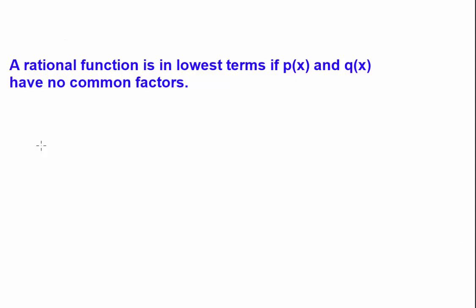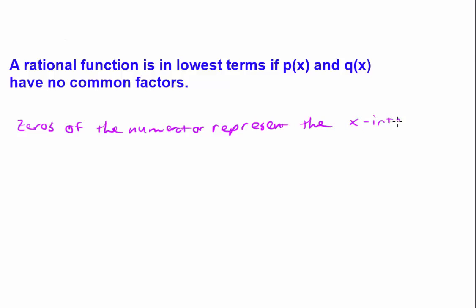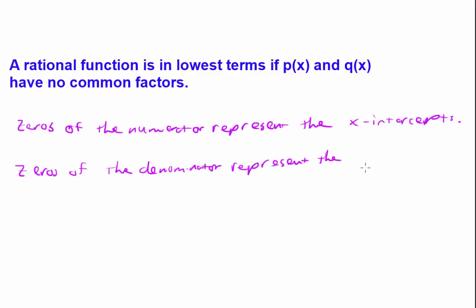A rational function is in lowest terms if p of x and q of x have no common factors. There's another property to discuss: the zeros of the numerator and the zeros of the denominator. Zeros of the numerator represent the x-intercepts. To find the x-intercepts, we set the numerator equal to 0 and solve. Zeros of the denominator represent the vertical asymptotes.